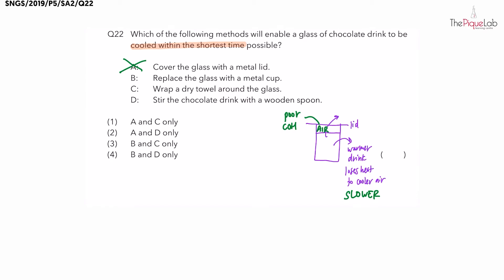Now what about the second method: replacing the glass with a metal cup. In this case, the material of the cup matters. Is metal a better or poorer conductor of heat compared to glass? Metal is a better conductor of heat than glass. So that warmer drink is going to lose heat much faster to the cooler air. This method is definitely going to work in cooling the drink quickly.